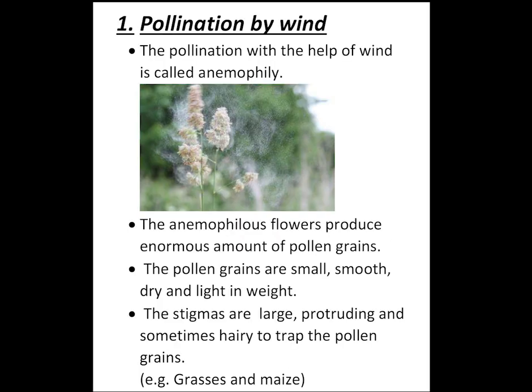First, pollination by wind. Pollination by wind is also known as anemophily. The pollination with the help of wind is called anemophily. Anemo means wind, phily means affinity or liking. So, the pollination with the help of wind is called anemophily. Anemophily flowers have some adaptations to pollinate through wind.